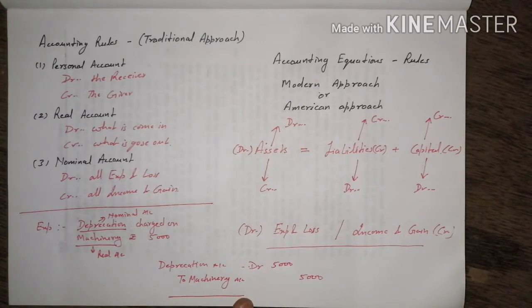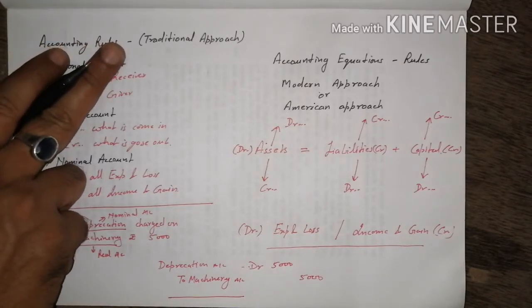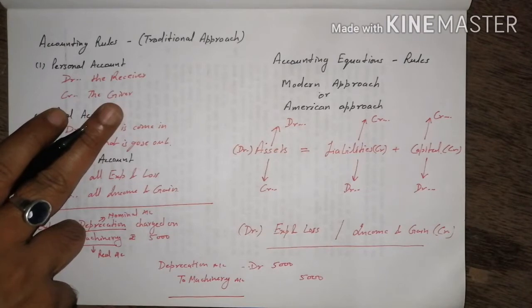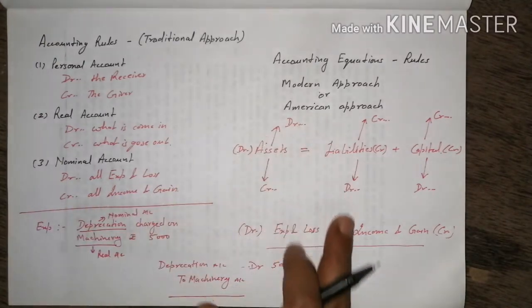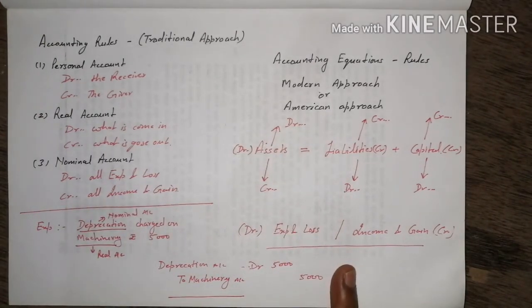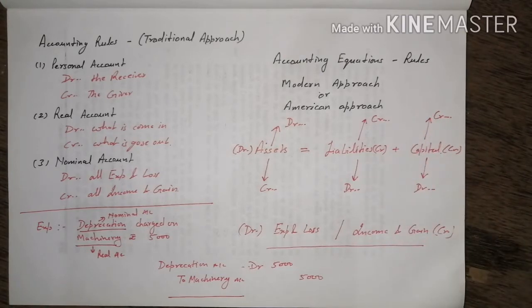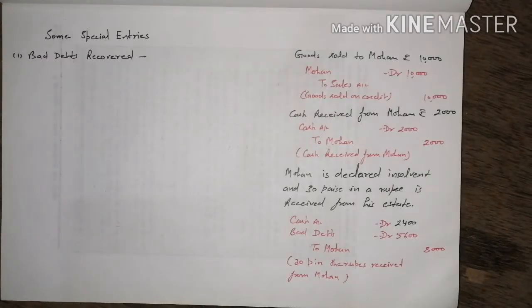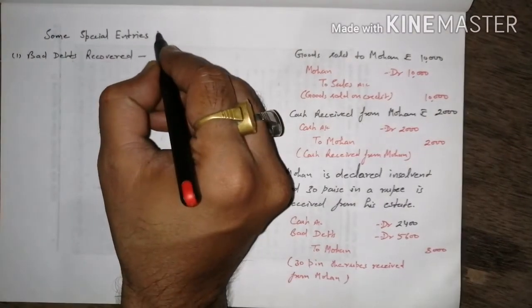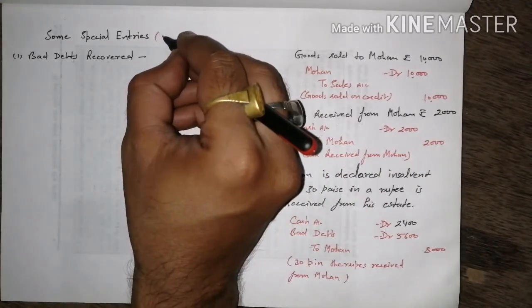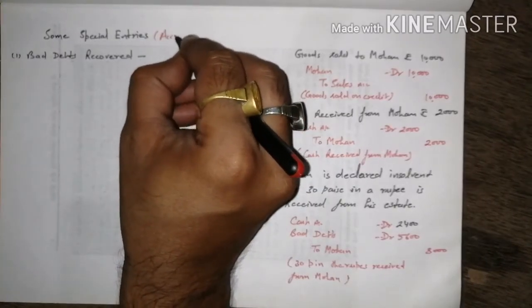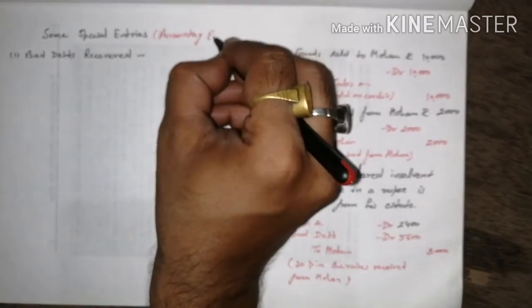The traditional approach applies to normal business transactions — goods purchase, sales, cash paid to outsider. The modern/American approach applies to advanced journal entries, such as depreciation and outstanding expenses at year-end. Some special entries are related to the accounting equation rule.